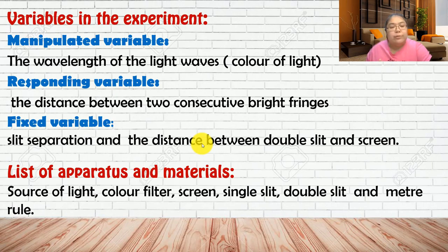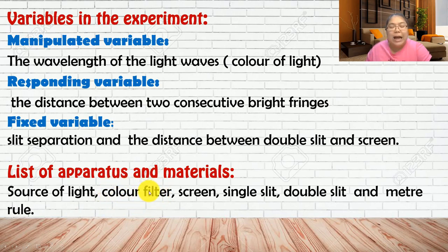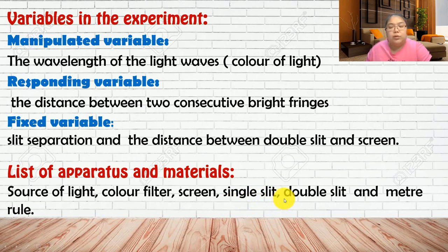Apparatus for the light experiment: ray box (or normal light with a color filter to change colors), screen, single slit (optional), double slit, and a meter rule for measuring fringe distance.